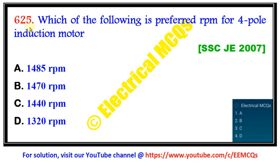Welcome students, now we are going to solve question number 625. What is the question? Which of the following is preferred RPM for a four-pole induction motor? These are four RPMs given here. You have to choose the correct one.